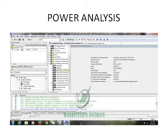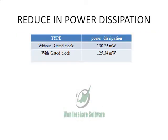While analyzing the power, we used the gated clock technique, where we can avoid unnecessary power transitions by disabling the unused components in any direction. Without applying the gated clock technique, power dissipation was 130.25 milliwatt, and after the application of the gated clock technique, the power dissipation has been reduced to 125.34 milliwatt.